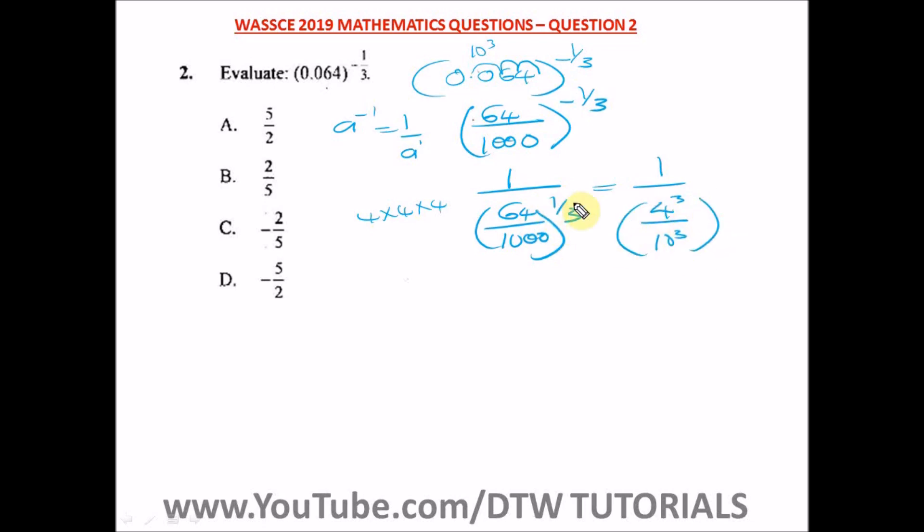All we are just looking for is canceling out this power. That's the indices simplification. So from here, we have 1 divided by 4 over 10. So since these powers are the same, we can bring out this 3. So we have a 3, then all in brackets, then that is 1 over 3.